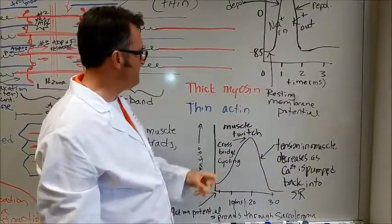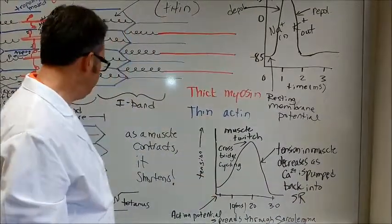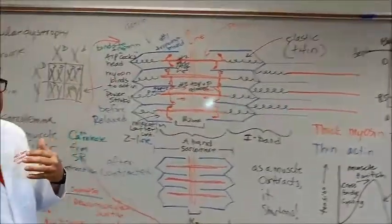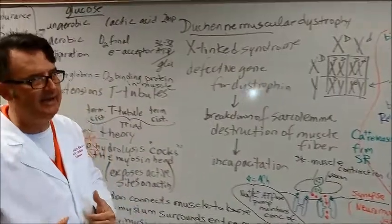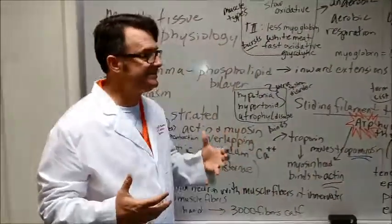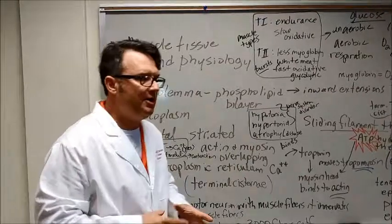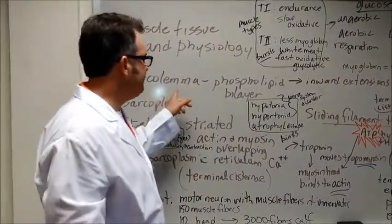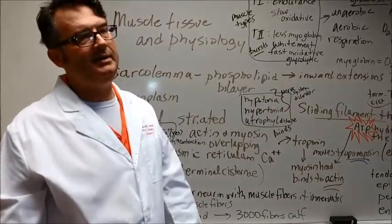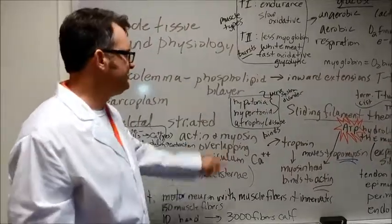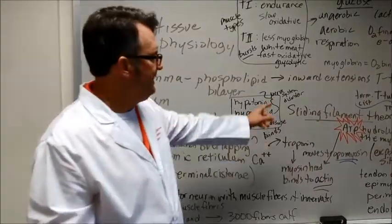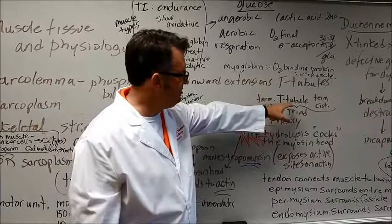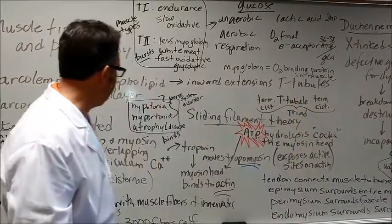Remember that thick filaments are myosin, thin filaments are actin. So I want you to come back over to this side of the board with me and let's begin in the beginning. That is a very good place to start even though we didn't really start in the beginning. This whole unit is on muscle tissue and physiology. The sarcolemma is the outer layer around the muscle cell. It is a phospholipid bilayer just like in a regular cell. The inward extensions are the t-tubules. Remember when we have a t-tubule with two terminal cisternae that's called a triad.